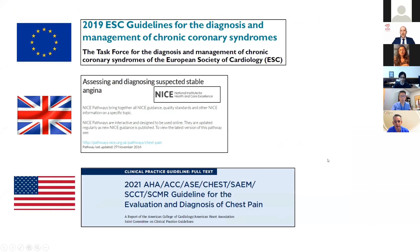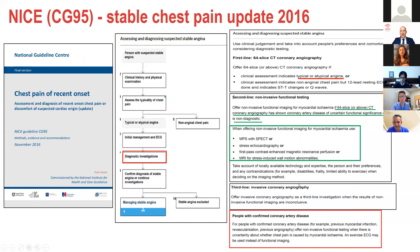Before discussing the 2021 ACC guidelines, I'll briefly put them in context with the UK NICE guidelines and the ESC guidelines. The 2016 UK chest pain guidelines are relatively conventional: assessing patient symptoms, history and examination, doing an ECG. In the NICE guidelines, CT is the only first-line test for de novo chest pain with typical or atypical angina.